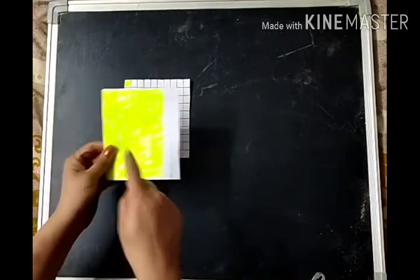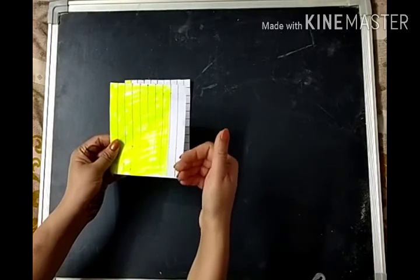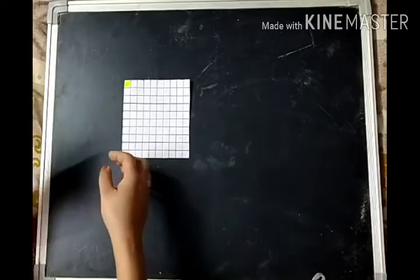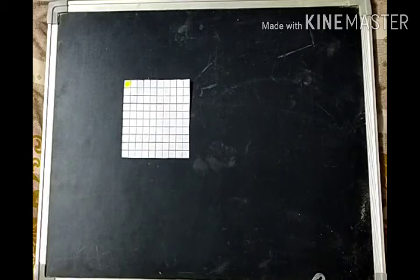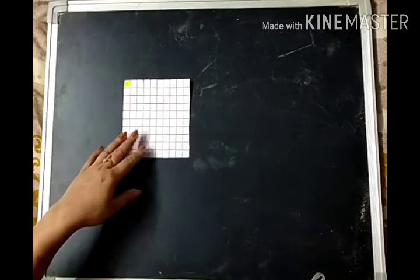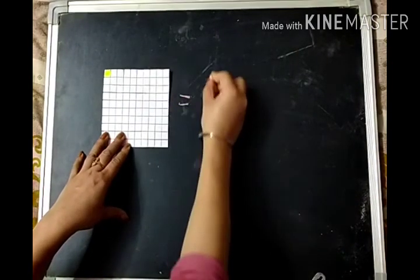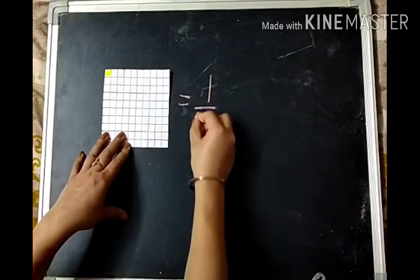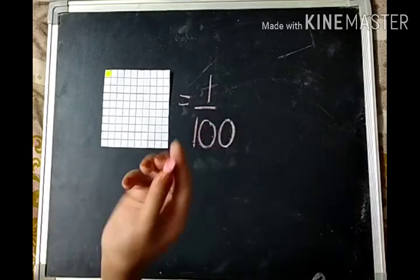So when I divided these ten parts into ten more parts of each, I'll get one hundred equal parts. And for those hundred equal parts, if I shade only one part of it, this will be written as a fraction — the fractional value for this is one on hundred.